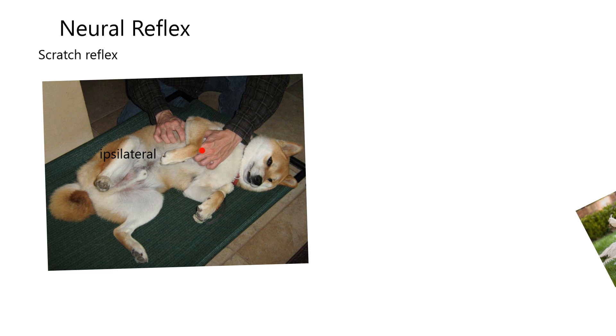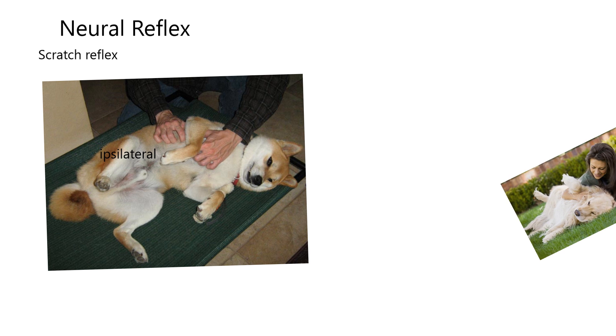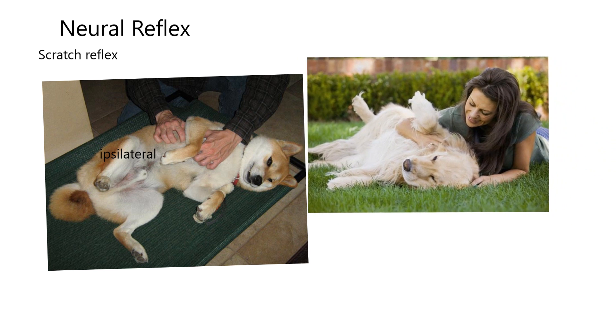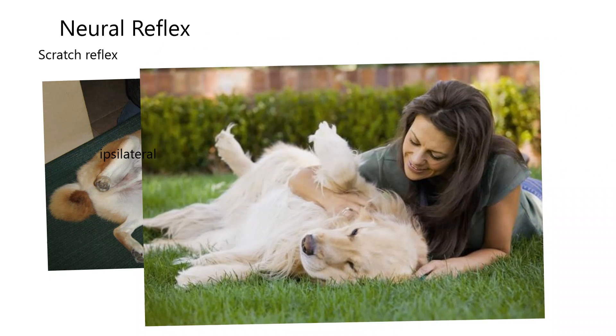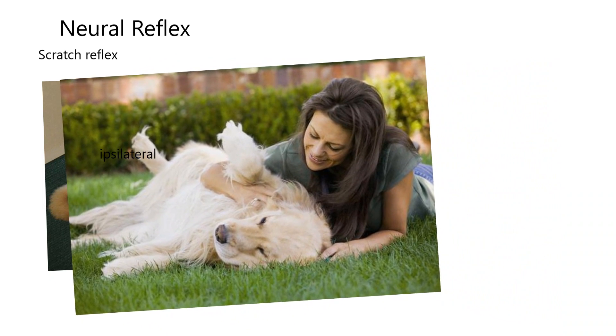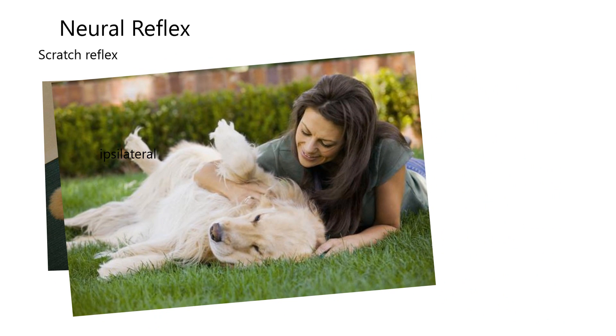it's always the ipsilateral rear leg that responds in this reflex. So it can be in the chest area, or it can be scratching up in the neck area, as in this example. I guess I can still use the word ipsilateral. So she's scratching the neck, and the ipsilateral rear leg of the dog is moving.